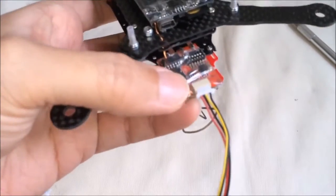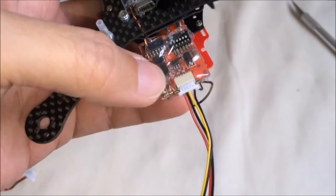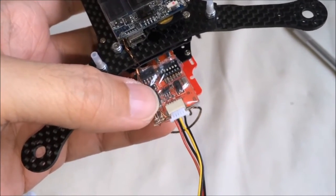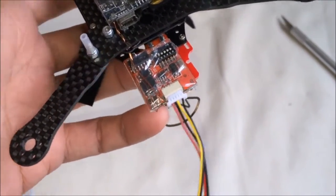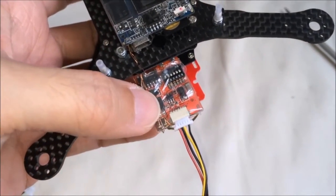The VTX has this connection here. And basically it's able to take 2S input 8.4V from the flight pack, as it has a step down voltage regulator inside.